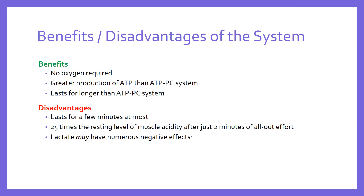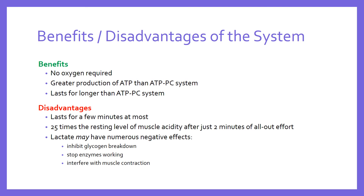At least three problems are suggested. First, that acidity in the muscle may inhibit the breakdown of more glycogen, thereby preventing further glycolysis and limiting energy availability. Second, it may prevent the enzymes that speed up the reaction from working effectively. Third, it may interfere with muscular contraction — the acidity may affect the muscle at a chemical level so it doesn't contract as effectively or with as much force. This can create the feeling that your muscles are heavy and that you're running through treacle.